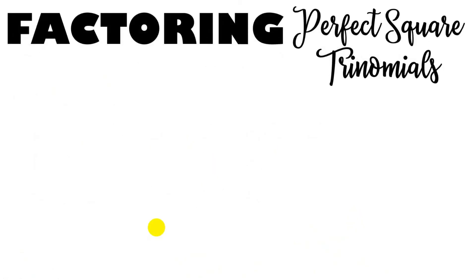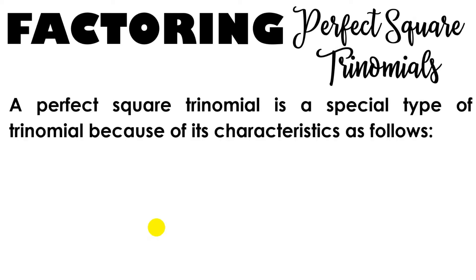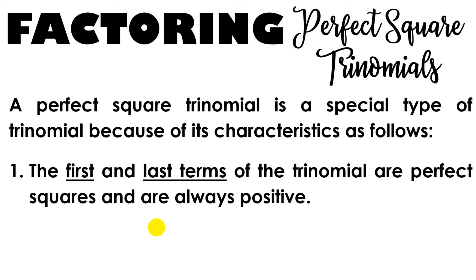How do we determine if a trinomial is a perfect square trinomial? A perfect square trinomial is a special type of trinomial because of its characteristics as follows. The first and the last terms of the trinomial are perfect squares and are always positive. So the first and last term of our PST are perfect squares.